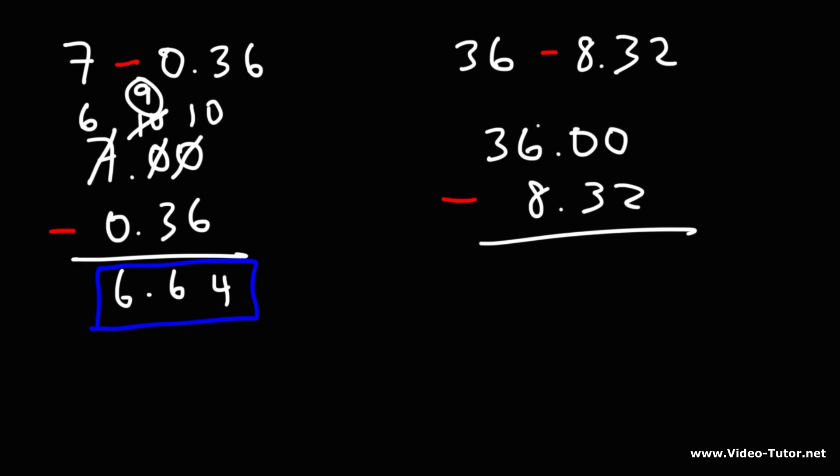So we need to borrow a 1 from the 6, that will be a 5, and this 0 will turn to a 10. Now we also need to borrow a 1 from the 10, making that a 9, and this 0 becomes a 10. So 10 minus 2 is 8. 9 minus 3 is 6.